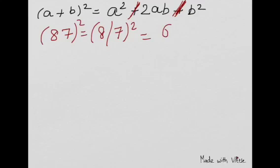Squaring 8 is 64. 7 squared is 49. 8 into 7 is 56, into 2 is 112.